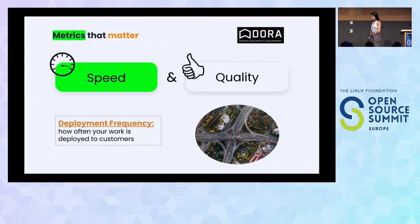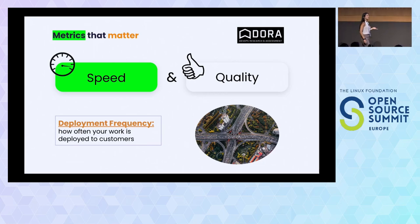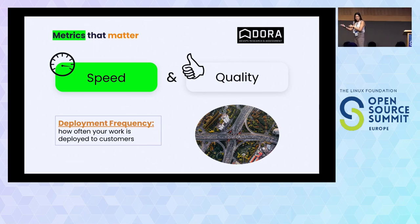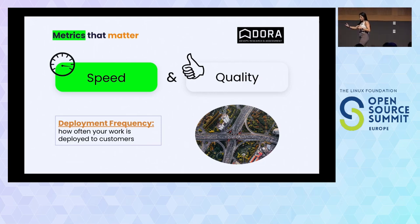Another metric associated with speed is deployment frequency — how often your work is deployed to customers. This is another way to measure our speed: how many times we are deploying to production. If we do it many times, it means we are probably delivering fast and reaching production much faster, working through the whole coding process at high speed. When this number is high, it means our speed is high as well.